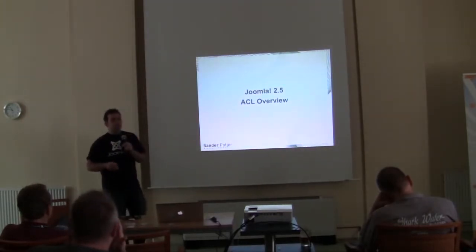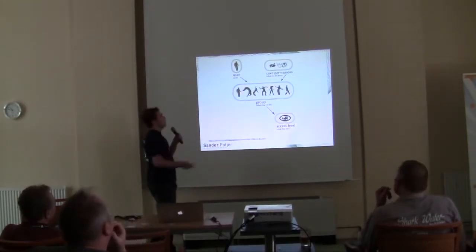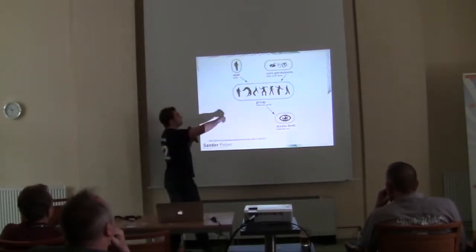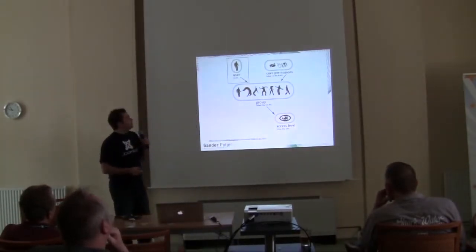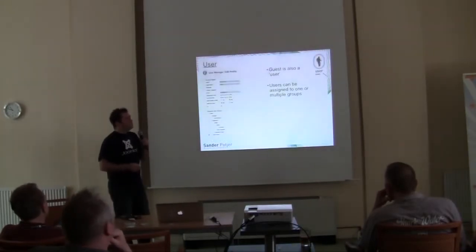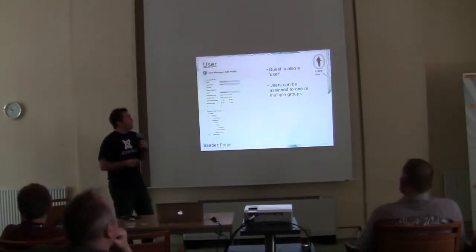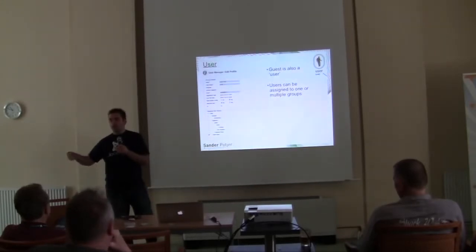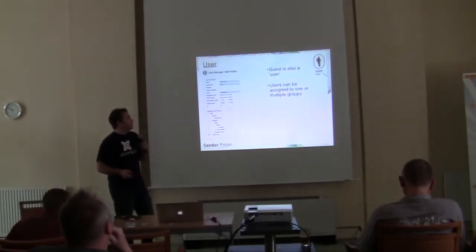A short introduction for how the ACL system works in Joomla 2.5. We can see this in an overview — a summary of the entire Joomla ACL. We have a user, we have core permissions, we have a group, and we have an access level. The user first: it's good to know that the guest is also seen as a user. The big difference between 1.5 and 2.5 is that we can assign users to multiple user groups — one, two, three, four, five. This makes it complicated because the settings will be merged into the actual setting for the user.